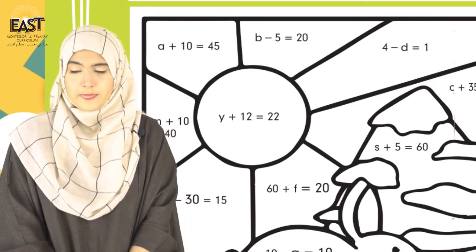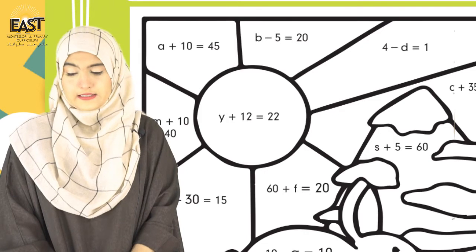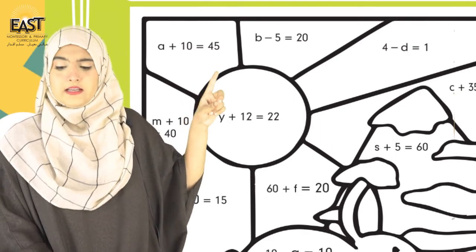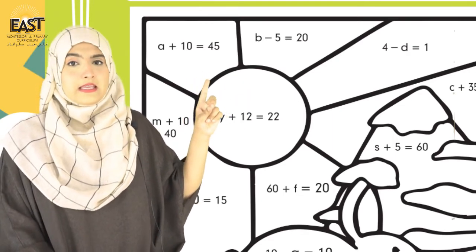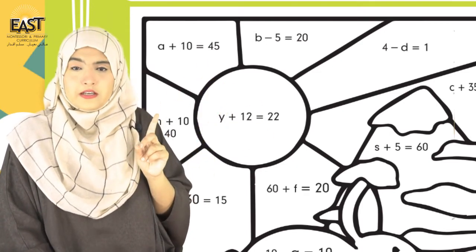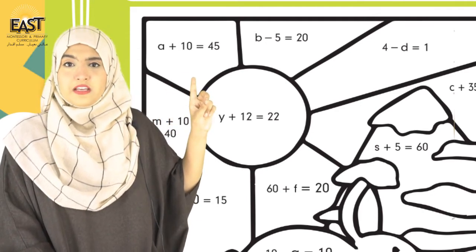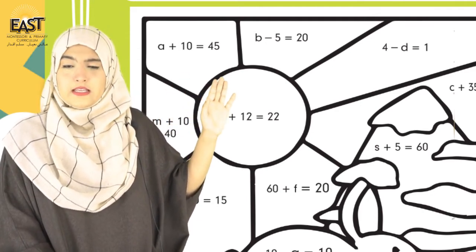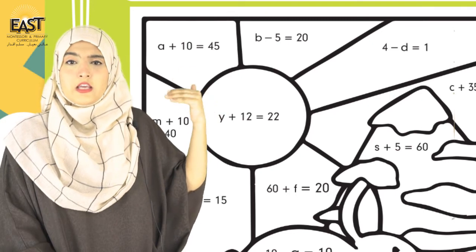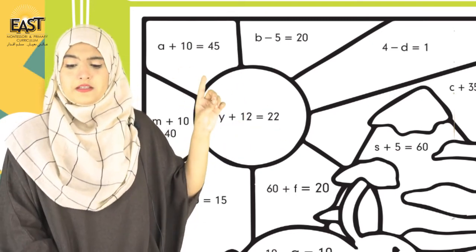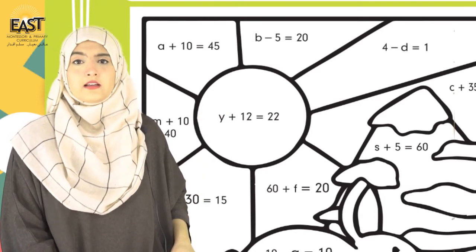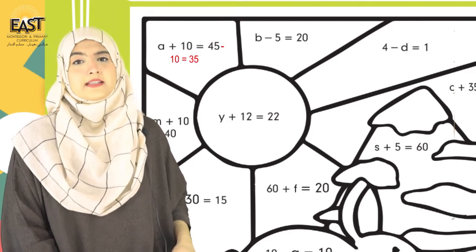Aapnei yahaan bhi basically yehi karna hai ins poori equations mein. Abh ja ba pahla part solve karheen ghe: a+10=45. Aapnei dhekna hai ki yahaan pe to plus hai, equals ke udher jake kiya ho jayega - minus. Operator ka reverse rule laghe ga yahaan. Variable ko alag karna zaroori hai. Yahaan pe 10 ta, equals to ke udher jake minus ho gaya. 45-10 ho jayega, minus karenghe, 35 humare paas answer á jayega.